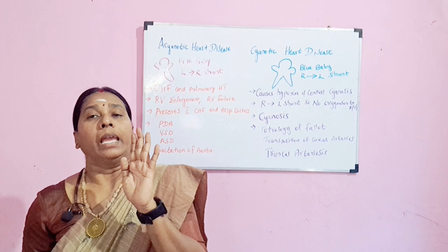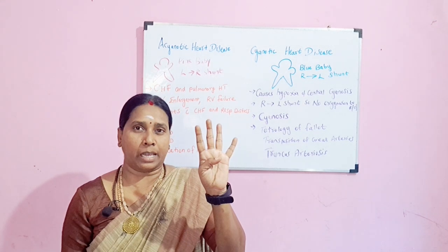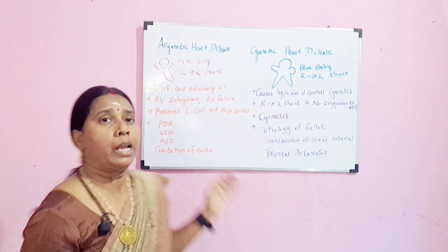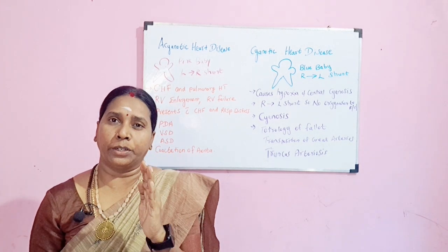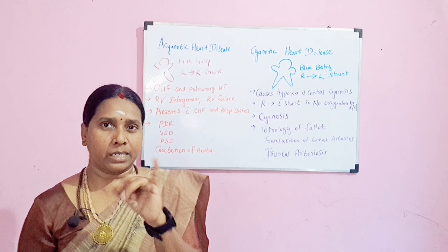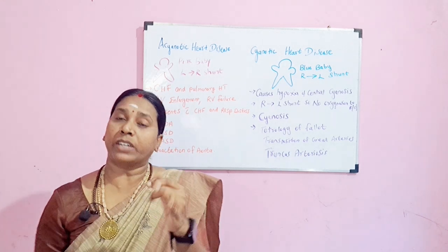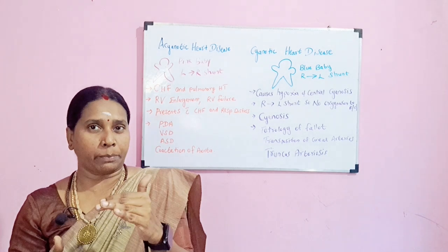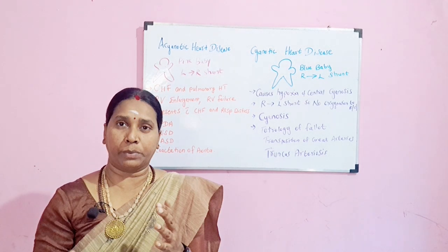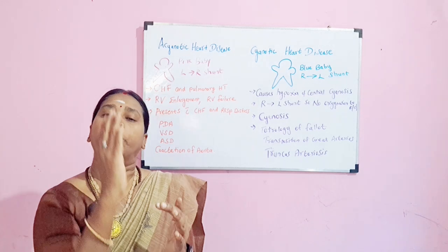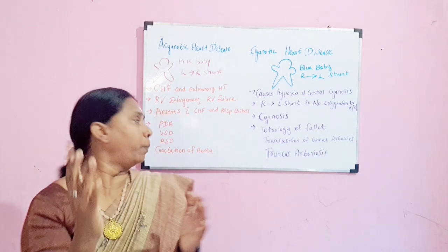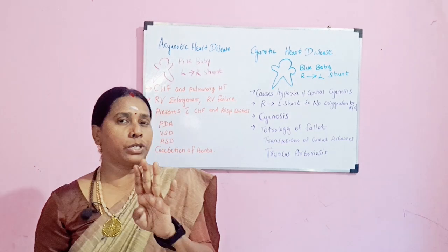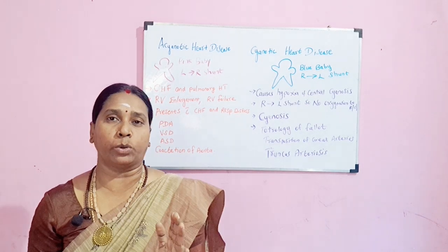In acyanotic heart disease we have four types. The first is PDA — patent ductus arteriosus. The second is ventricular septal defect, where the shunt is between the ventricles. The third is atrial septal defect, where there is an opening in the septum between the atria. And the fourth is coarctation of the aorta.